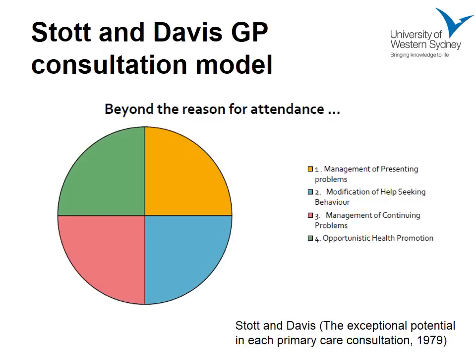The third area is dealing with ongoing or concurrent problems — people tend to have more than one condition at the same time. They might present with a sore throat but you also deal with the diabetes, a breast lump, hypertension, or psychosocial issues. The fourth category is opportunistic health promotion — you might have a couple of spare minutes to say 'When was the last time you had a breast check? Maybe we should talk about that today.'